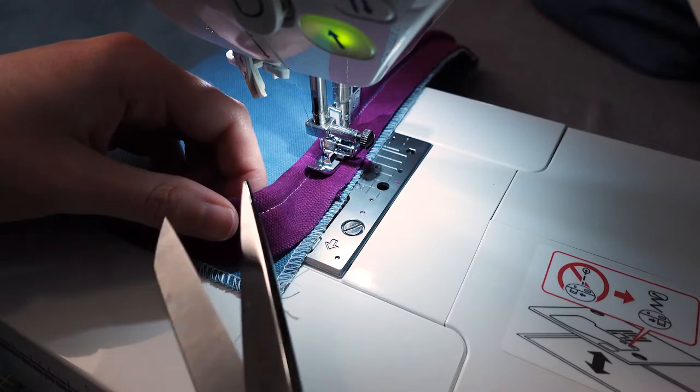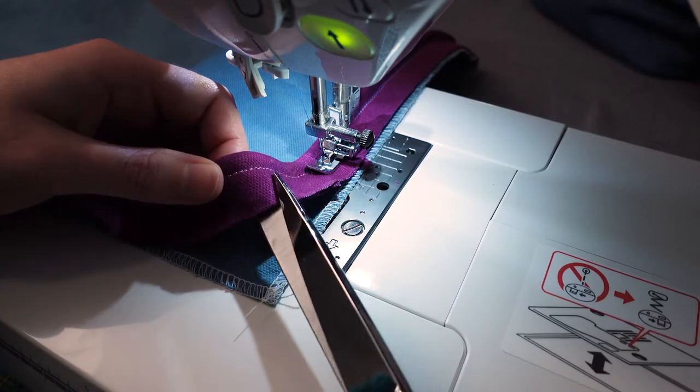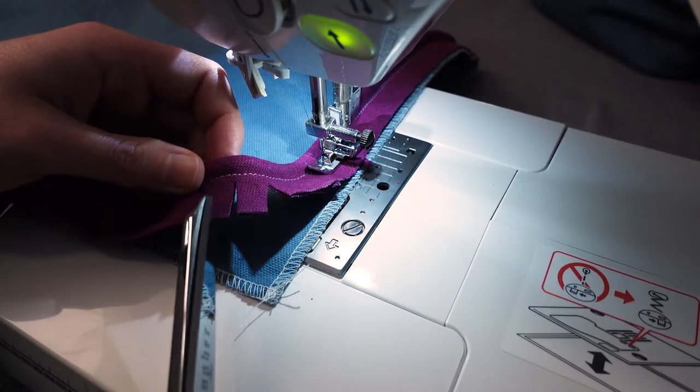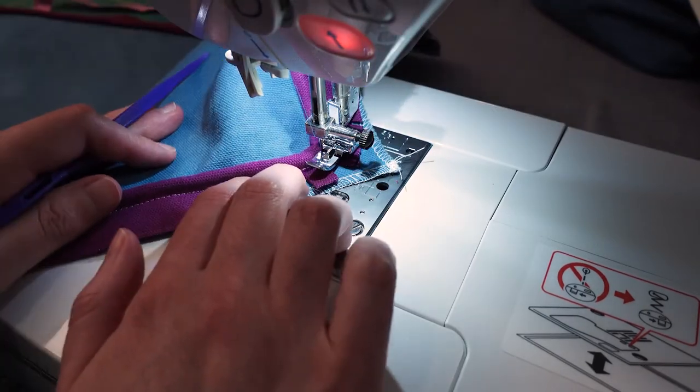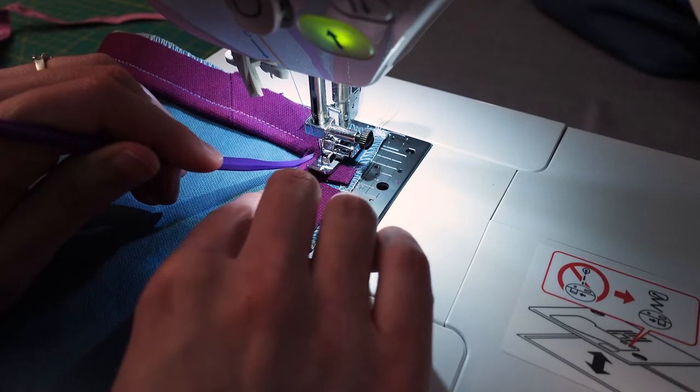Once the piping was secured to the piping fabric, I sewed the piping onto the pillow starting in the lower right corner. This way the end will be hidden and not in the way of the zipper I'll be installing on the pillow bottom.